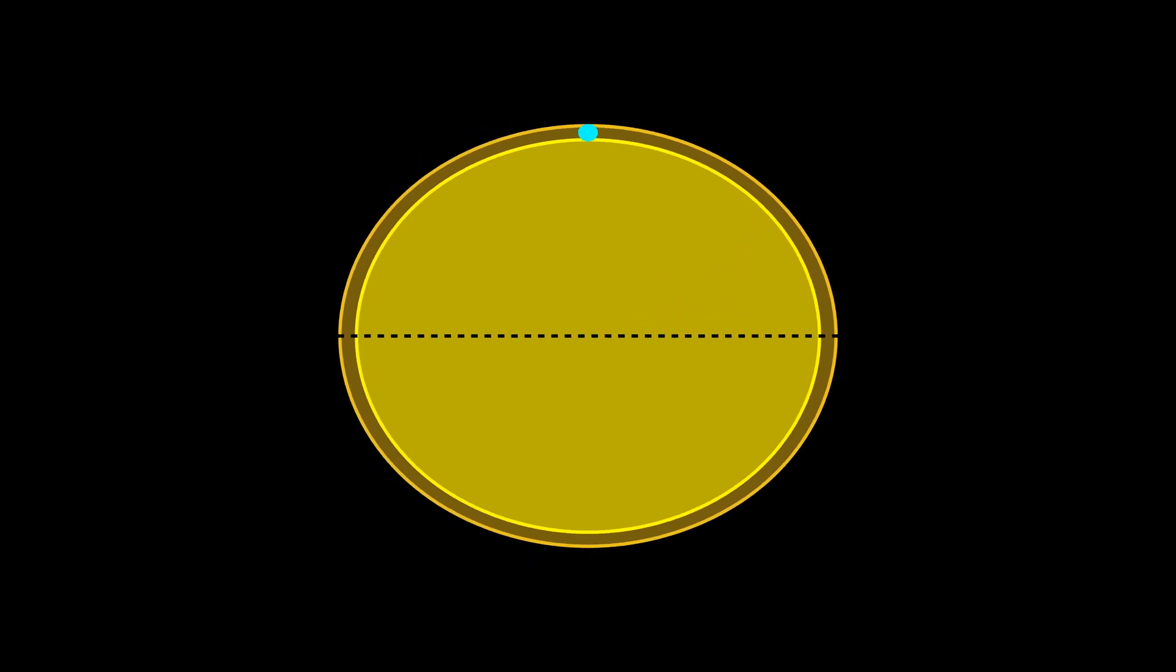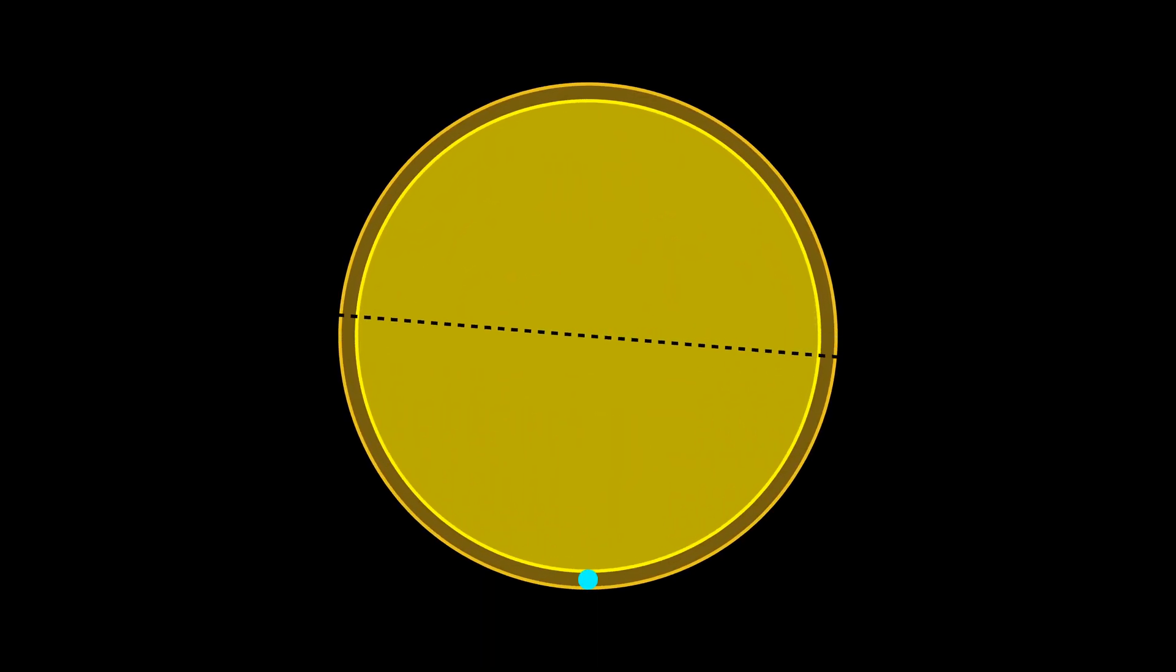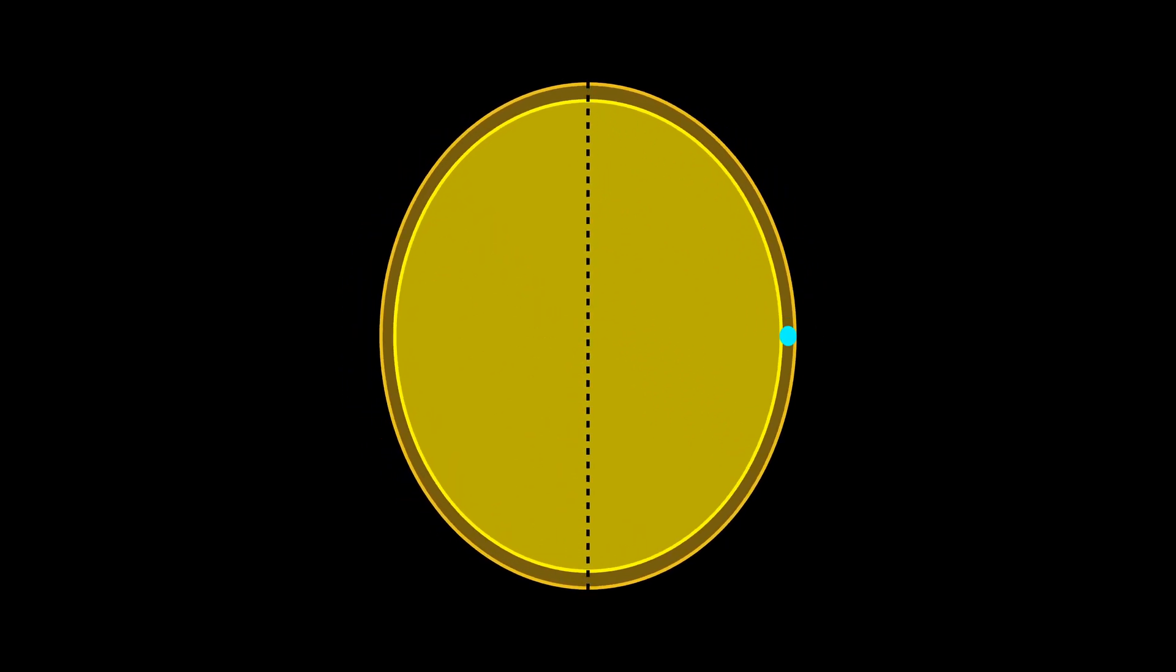Similarly, there are an infinite number of lines that you can reflect across that are all symmetries. And the collection of all these rotations and reflections form the group of symmetries of the coin, or more generally, of any circle. In this case, producing an infinite set.